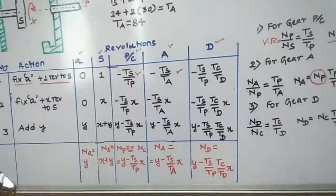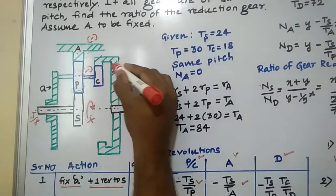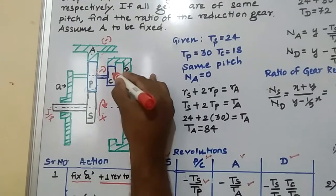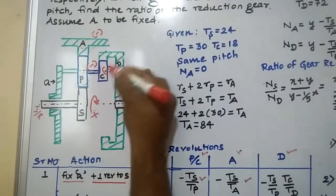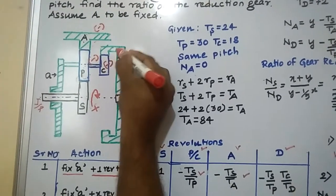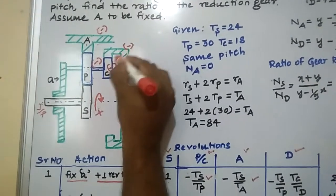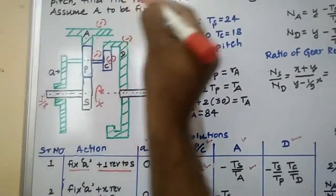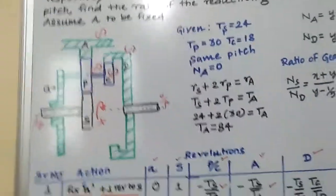Then come to gear D. When you look at gear D, which direction does it rotate? P and C are the compound gear train — C is also in the negative direction. D is also having an internal thread, so it also becomes negative, because C and D rotate in the same direction — that is anticlockwise. That is why I have taken D also with a negative sign.